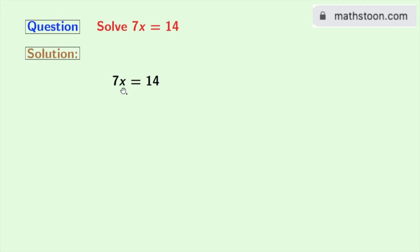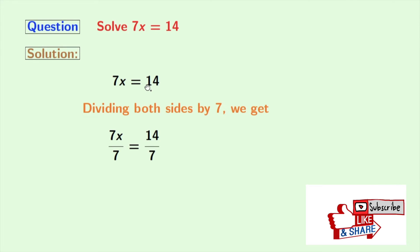So we get 7x divided by 7 equals 14 divided by 7.